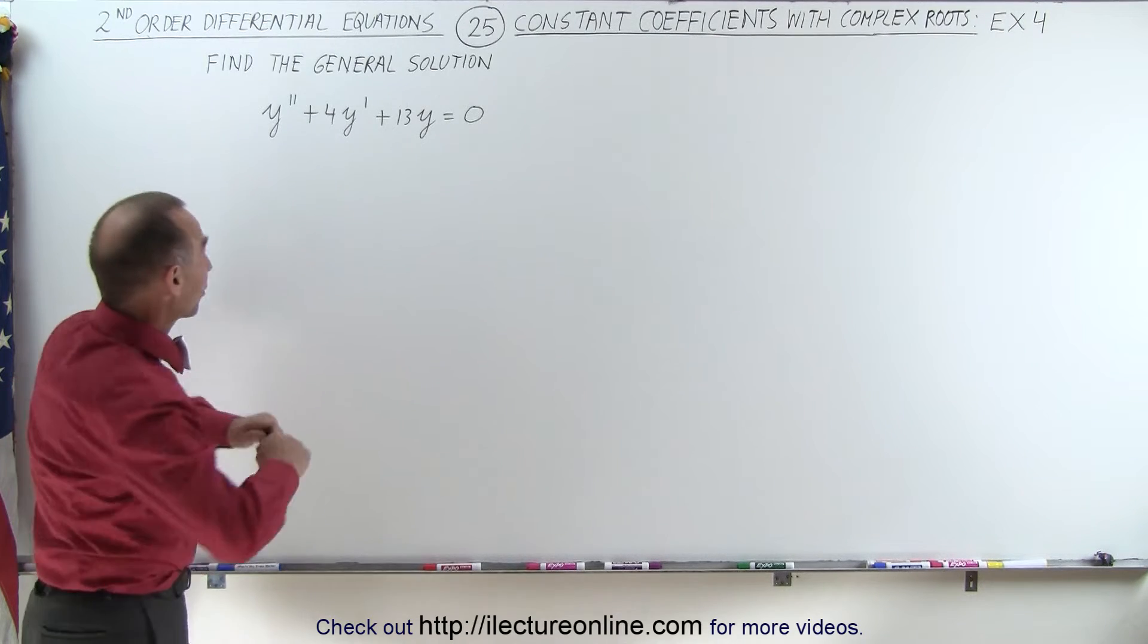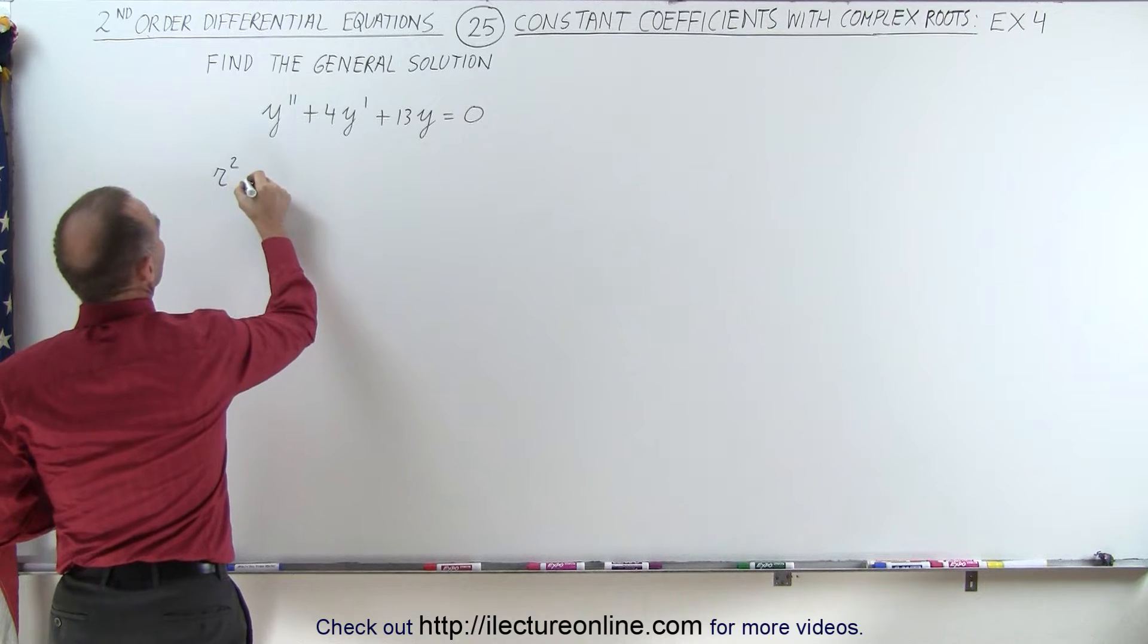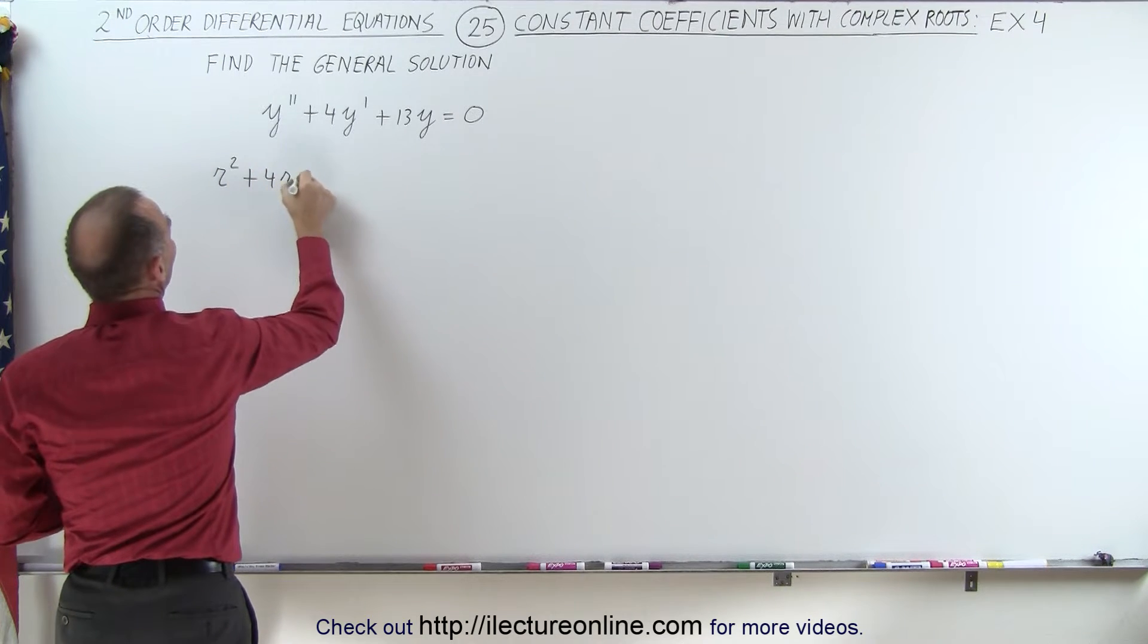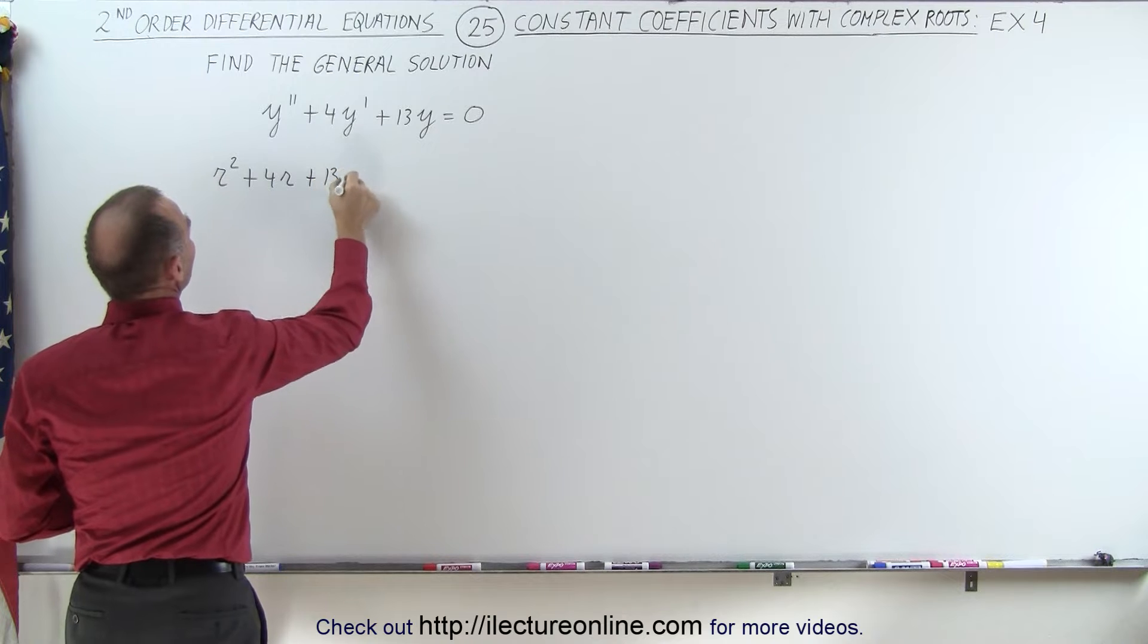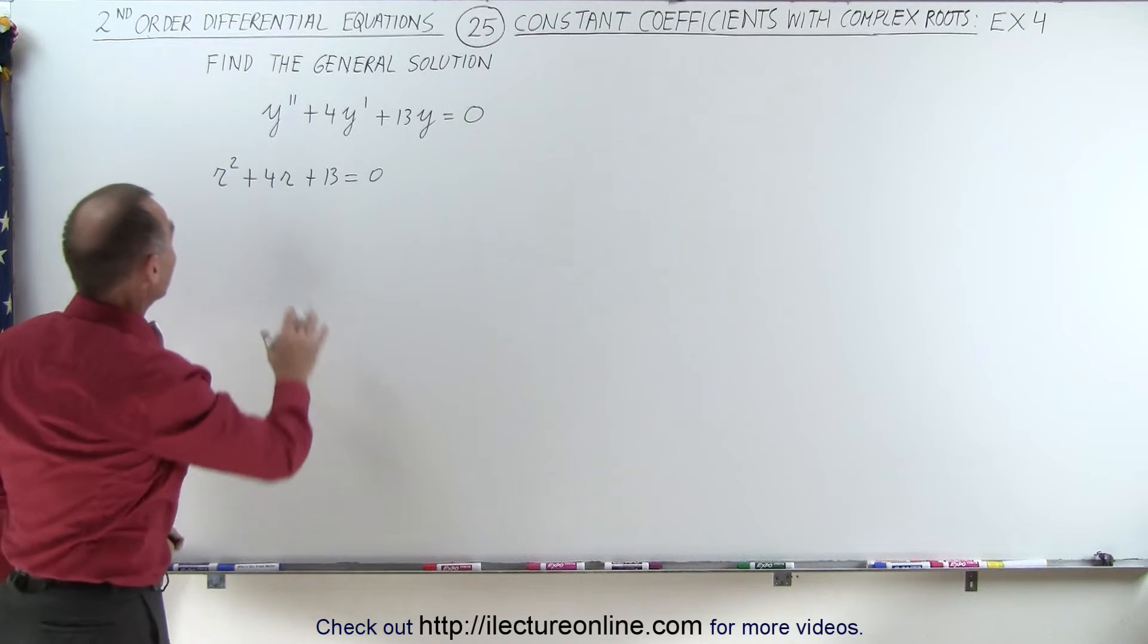Starting with the characteristic equation, we get r squared plus 4 times r plus 13 equals 0. And of course, when we find the roots of this, we end up with complex roots.